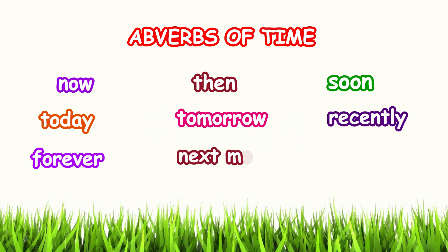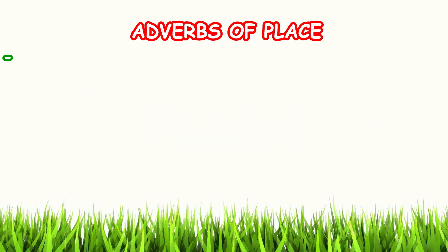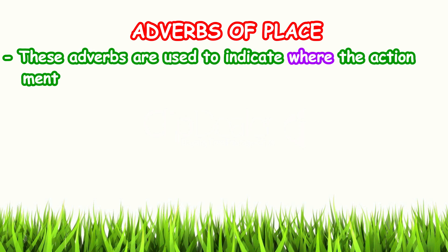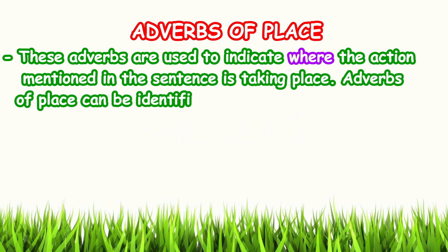So the words now, soon, then, today, tomorrow, recently, forever, next month, tonight, and later are the adverbs of time. Let's check out adverbs of place. These adverbs are used to indicate where the action mentioned in the sentence is taking place. Adverbs of place can be identified by asking the question 'where?'